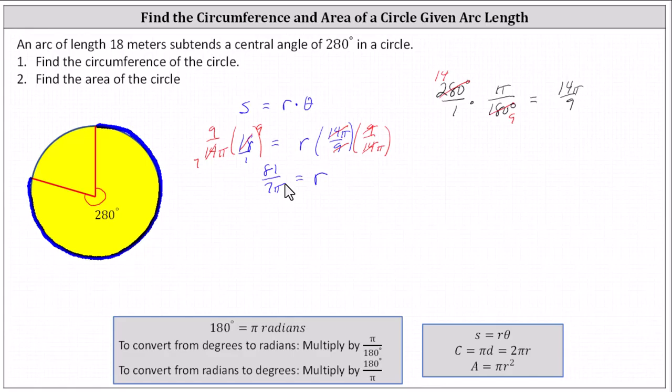Now knowing R, we can determine the circumference as well as the area. The circumference C is equal to two pi R, which in our case is two pi times the radius, which is 81 divided by seven pi.